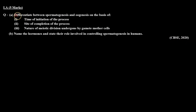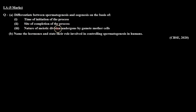The question is: Part A - differentiate between spermatogenesis and oogenesis on the basis of: first, time of initiation of the process; second, site of completion of the process; third, nature of meiotic division undergone by gamete mother cells. And Part B - name the hormones and state their role involved in controlling spermatogenesis in humans.